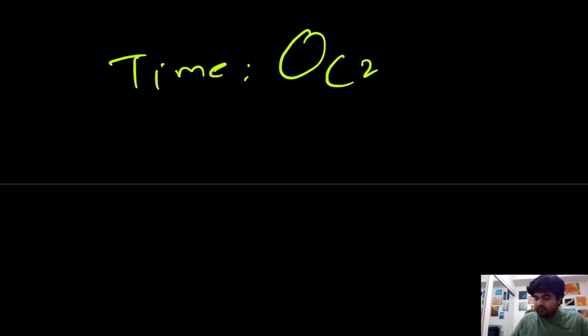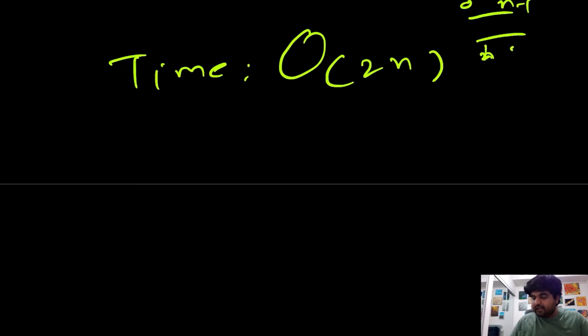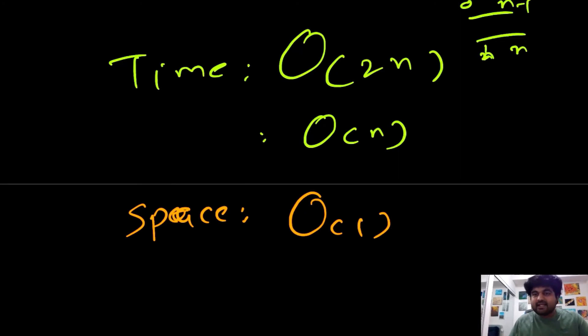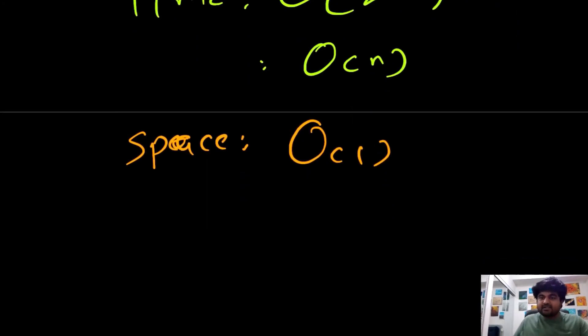If we calculate the time and space complexity: the time complexity is O(2N) because we are running two loops — zero to N minus one, and one to N — which generically becomes O(N). And the space complexity would be O(1) because apart from storing a couple of parameters, we are not using any additional space. So we are able to run this in constant space.